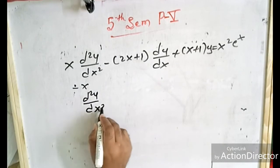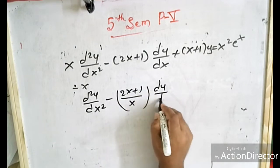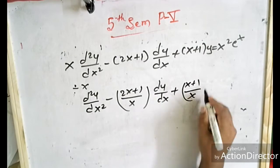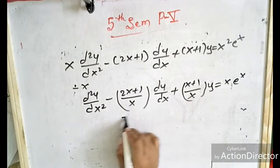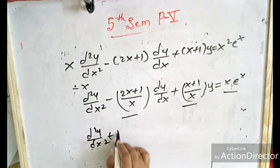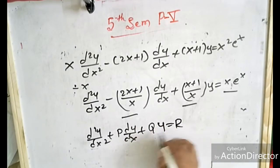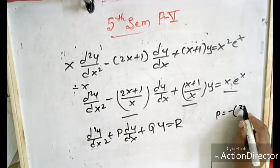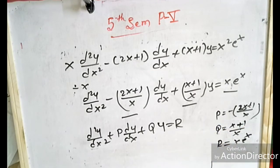Dividing by x to make the coefficient of d²y/dx² equal to 1: d²y/dx² minus [(2x plus 1)/x]·dy/dx plus [(x plus 1)/x]·y = xe^x. So P equals minus(2x plus 1)/x, Q equals (x plus 1)/x, R equals x·e^x.